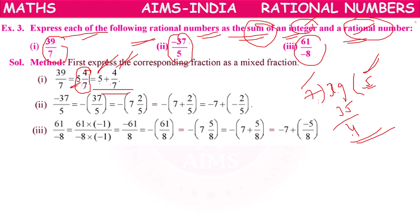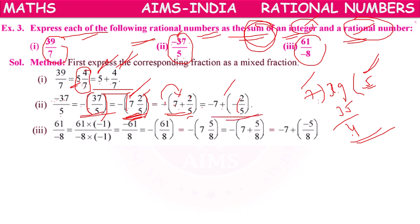For -37/5: 5 × 7 = 35, remainder 2. So 37/5 = 7 + 2/5. Since we have minus, keep it outside: -37/5 = -(7 + 2/5) = -7 + (-2/5). The minus distributes inside, giving integer -7 and rational number -2/5.